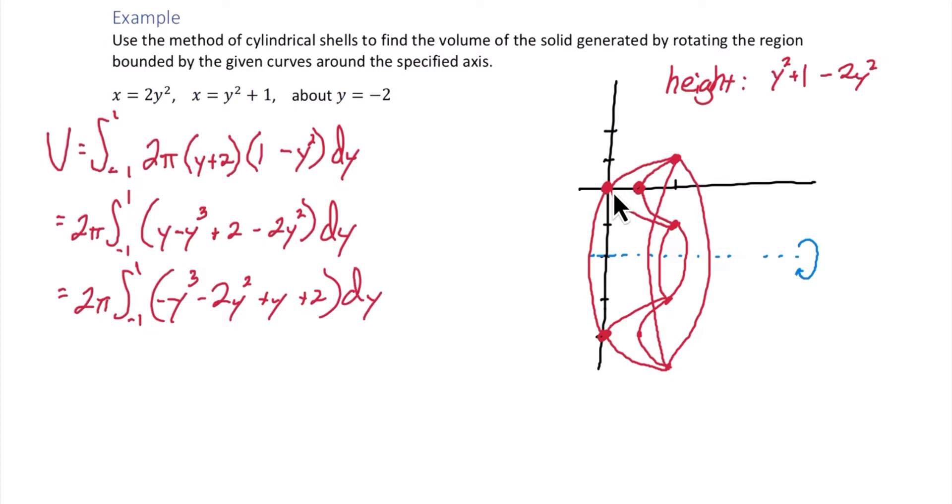And now integrating. 2 pi times negative 1 fourth y to the fourth minus 2 thirds y cubed plus 1 half y squared plus 2y. And we want to integrate from negative 1 to 1.